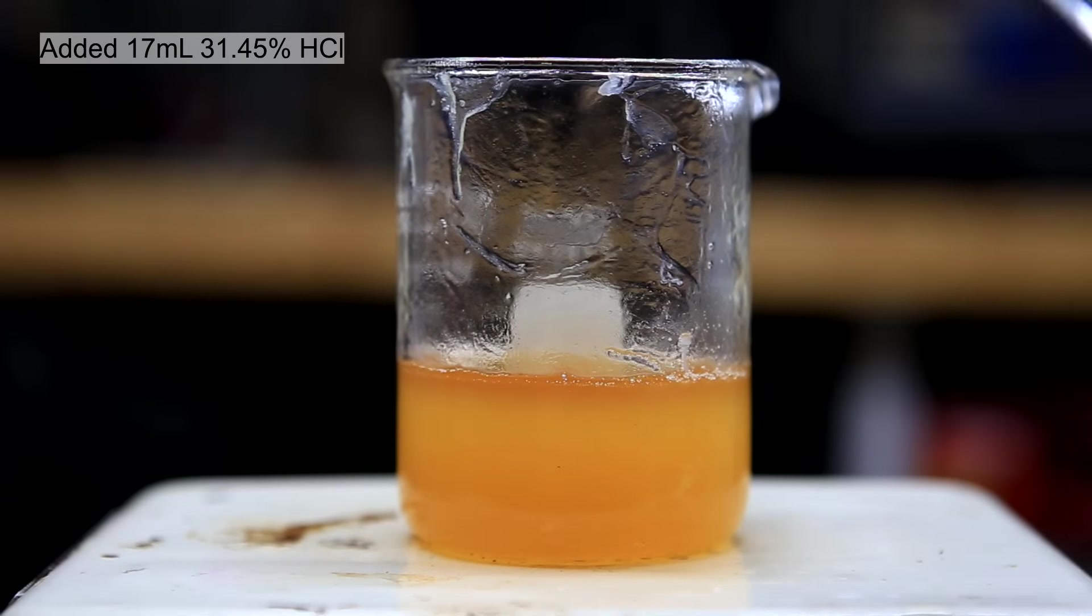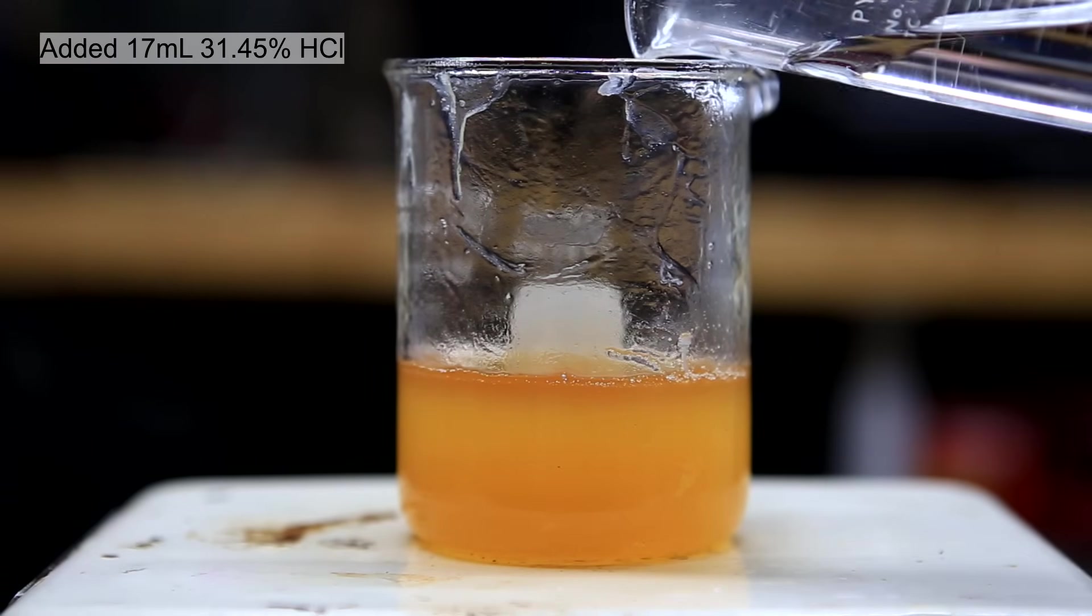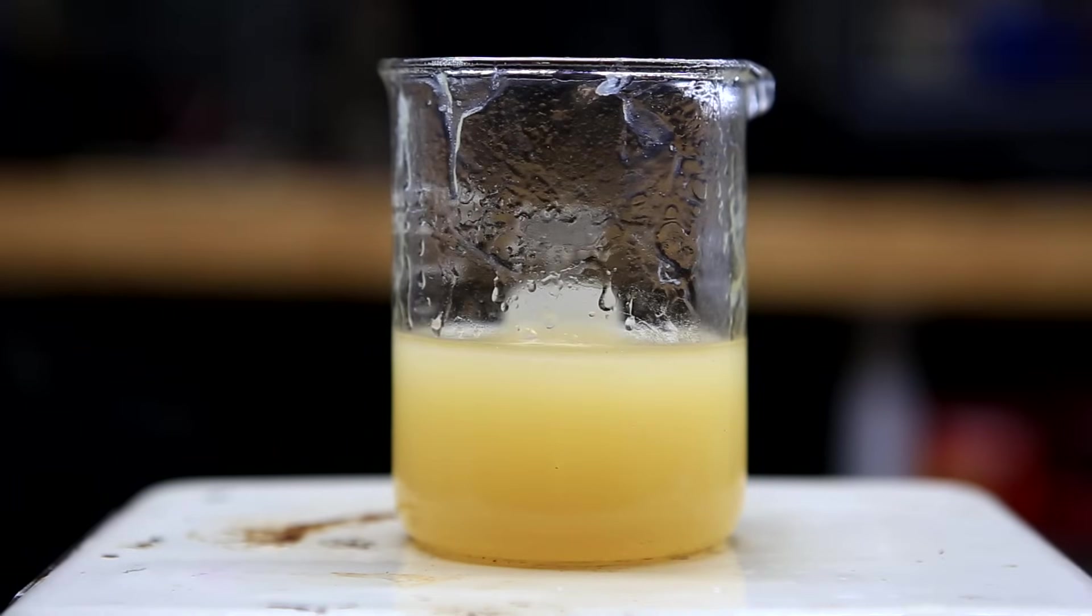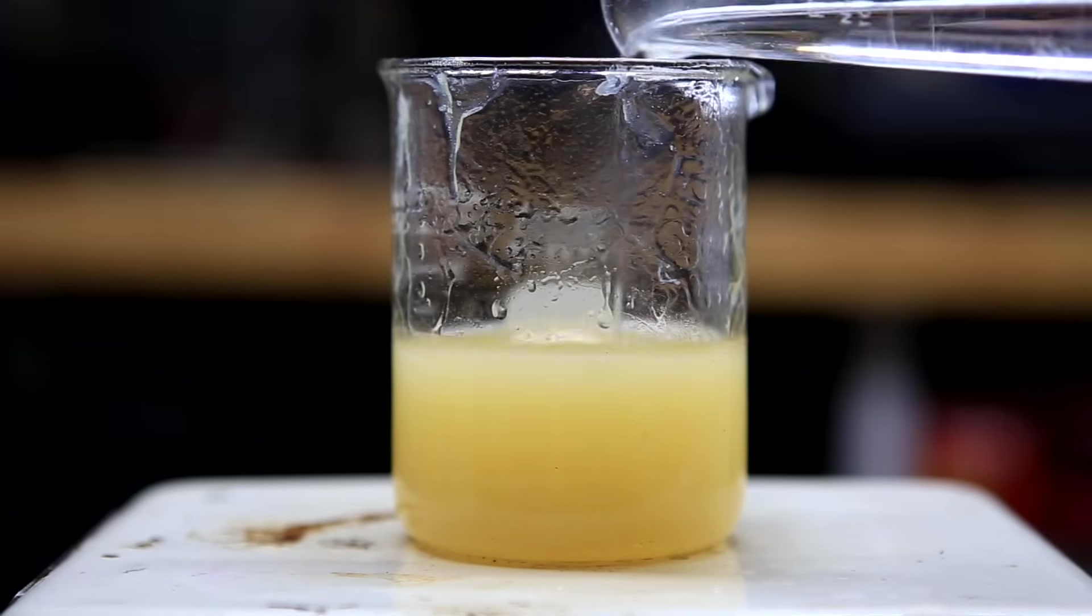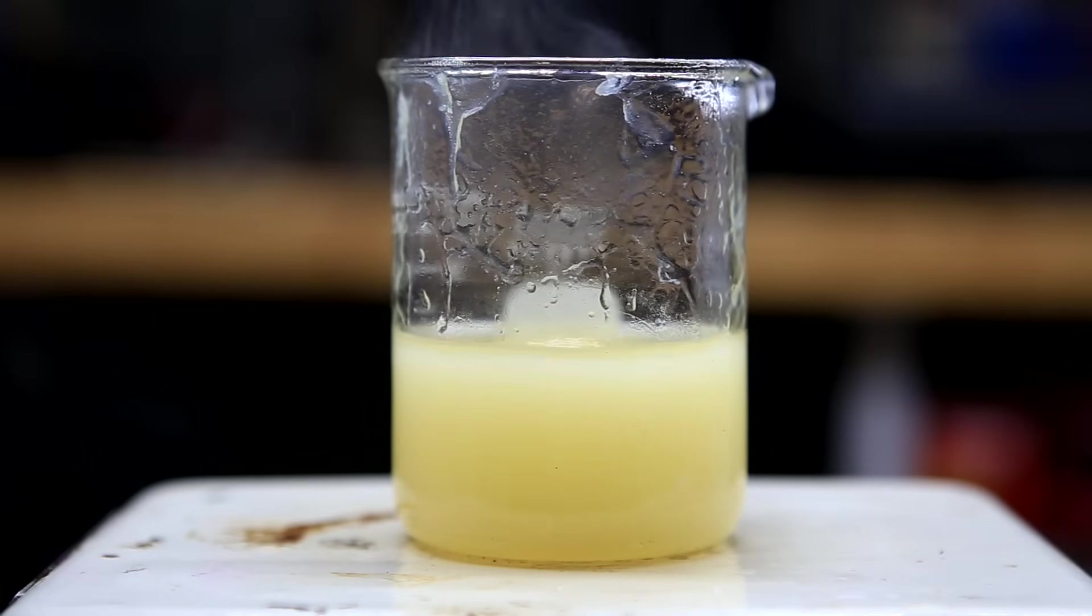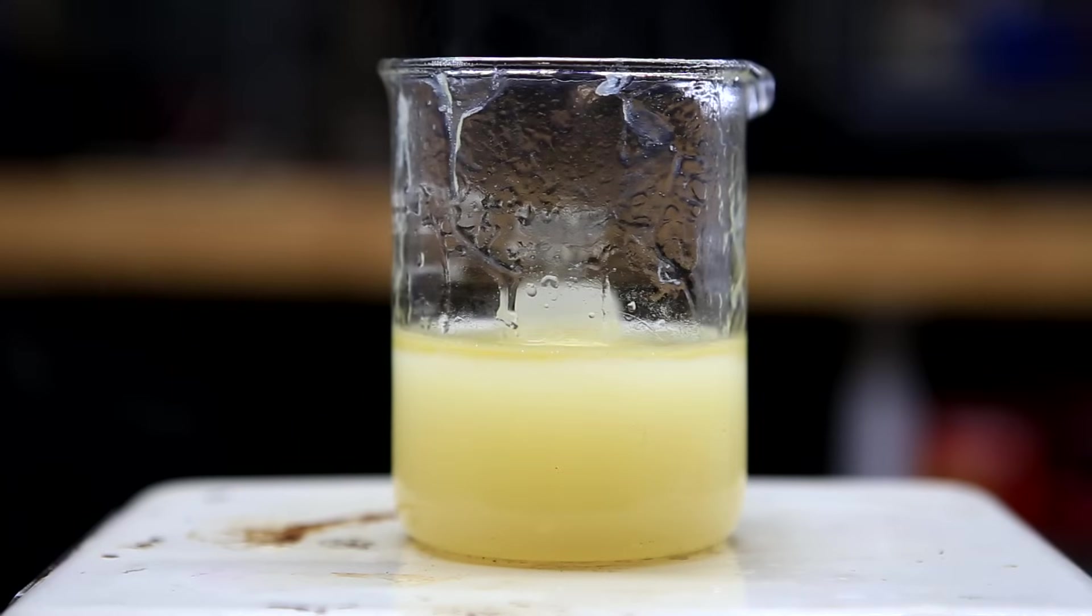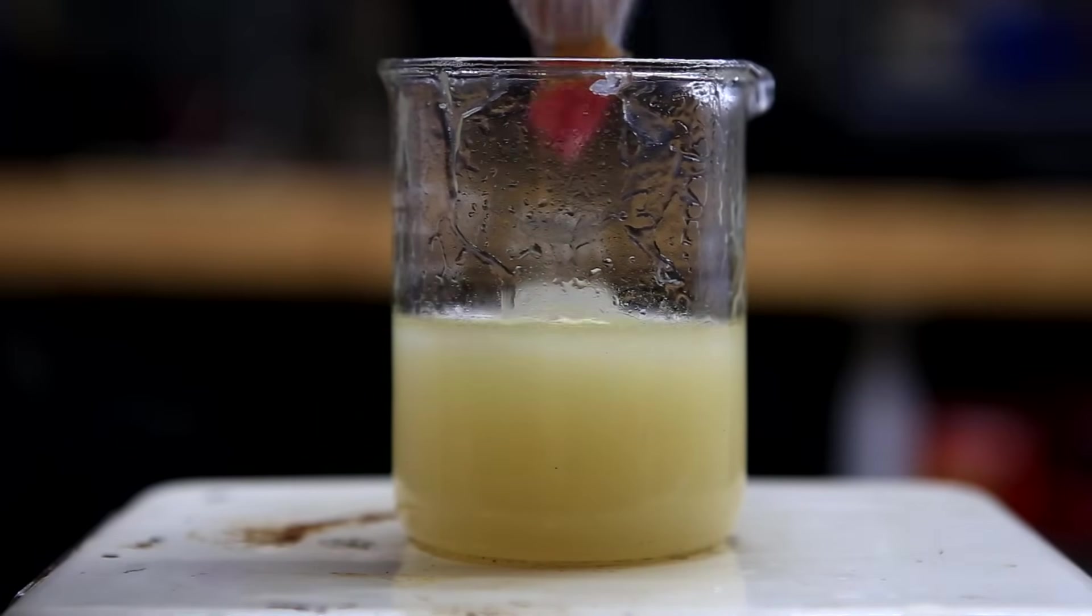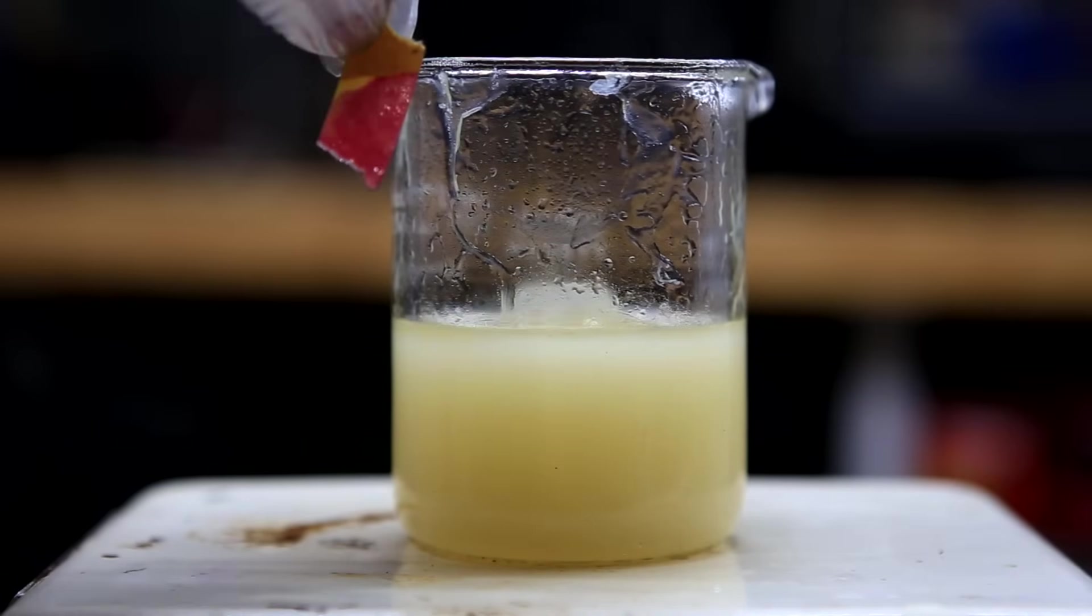To the crude glycerin was added a total of 17 milliliters of 31.45% hydrochloric acid. The addition of the hydrochloric acid will react with the base to form water and salt, which you can see precipitating out. The addition of the acid will also regenerate fatty acids from their salt form. The goal in this step was to make it strongly acidic with a pH of around 1.